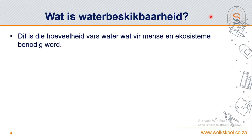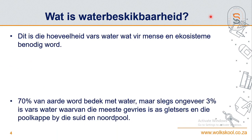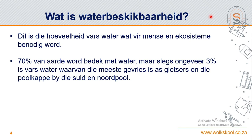Water beskikbaarheid gaan dus oor die hoeveelheid vars water wat vir die mens en vir al sy aktiwiteite waar hy by betrokke is, as ook natuurlik ekosisteme benodig. So dit is wat water beskikbaarheid beteken. Nou is dit ook so dat ons weet die aarde - 70% van ons aarde bestaan uit water of is bedek met water, maar die water is nie alles bruikbare vars water soos wat die mens kan gebruik nie. Daar is slegs maar so 3% van die water wat vars water is.